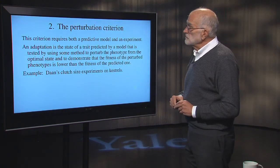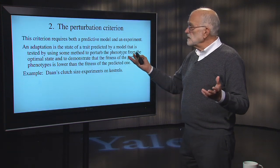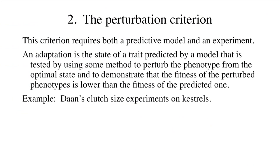The second criterion is the perturbation criterion. This requires a predictive model and an experiment. By predictive model, I mean a good, well-thought-out reason to expect that the trait ought to be in that state — sometimes a mathematical model, sometimes a verbal model with good logic. An adaptation under this criterion is the state of a trait that's been predicted, tested by perturbing the phenotype from its optimal state, and demonstrated to have lower fitness than the predicted state when perturbed. This is not easy to do.